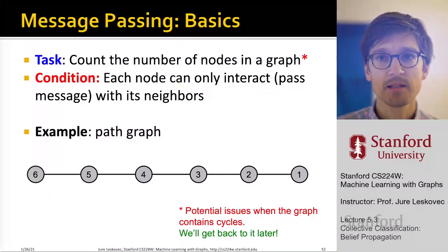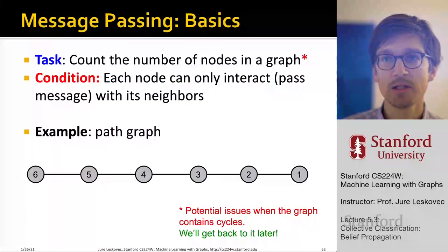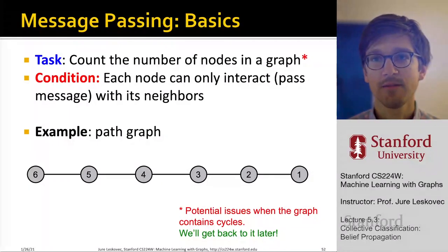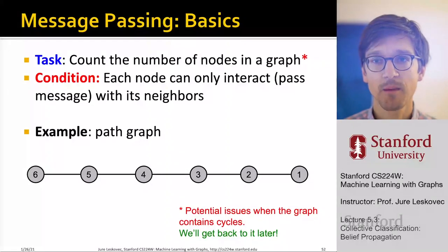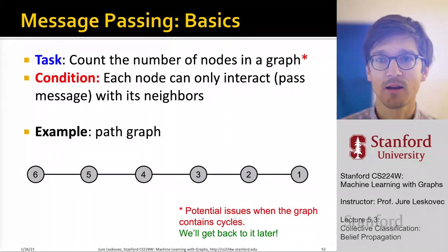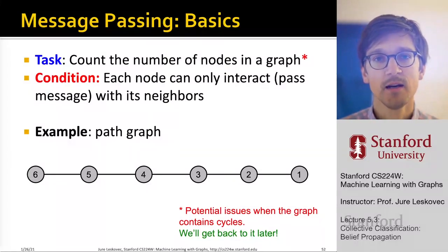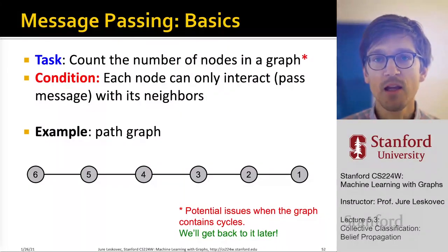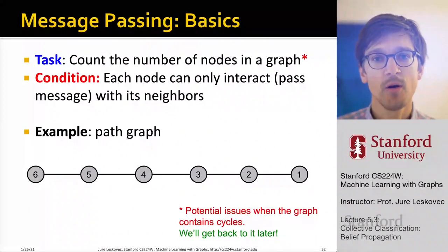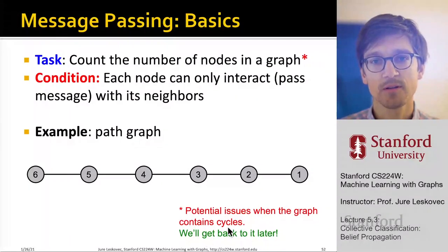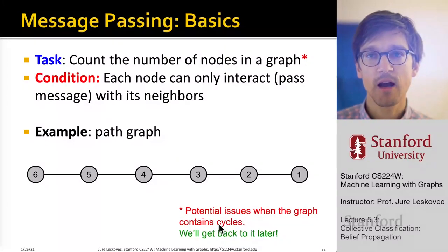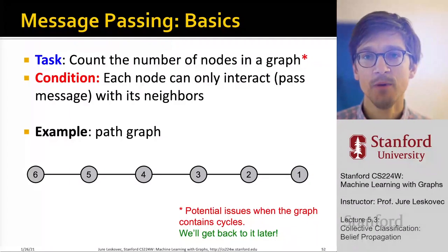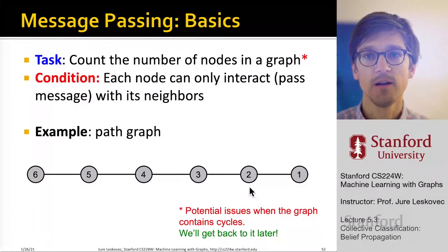Let me show you some basics about message passing, first on simple graphs. We'll do this on a line graph, then generalize to a tree-type graph, and then apply it to general graphs. For simplicity, let's assume we want to count the number of nodes in a graph using message passing, where each node can only interact with its neighbors — the other nodes it is connected to.